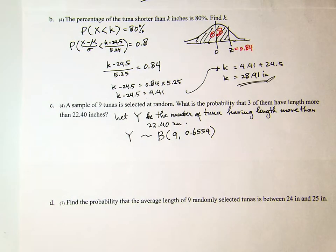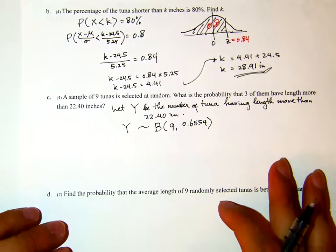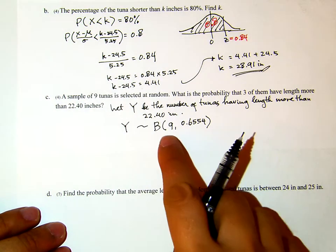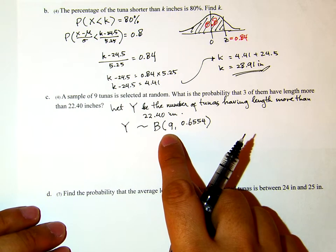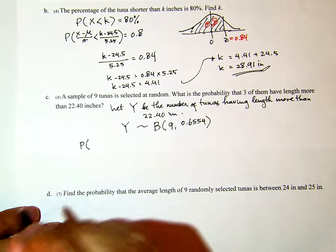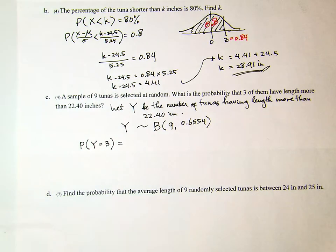The number of tunas in this category will be binomially distributed — we have nine tunas and the probability for each one to have length more than 22.40 inches is 0.6554. So y ~ Binomial(n=9, p=0.6554). The question asks: what is the probability that exactly three of them have length more than 22.40 inches? So we want P(Y = 3).